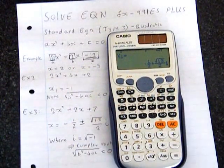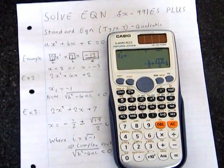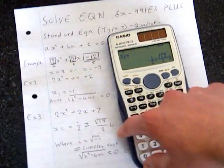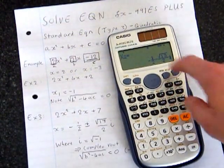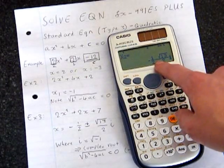And this gives us a complex solution, which is exactly what we expect. And if you press equals again, it gives you the negative, which is the other solution.